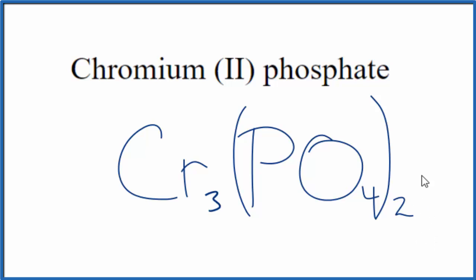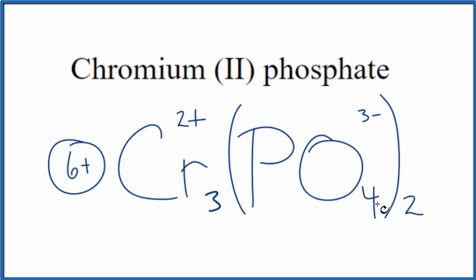Let's check our work, though. So, we said chromium here has a charge of 2+, and the whole phosphate, each one, is 3-. 3 times 2+, that's 6+, and then over here, we have 2 times 3-, that's 6-. These two numbers add up to zero, give us a net charge of zero.